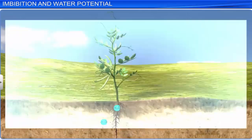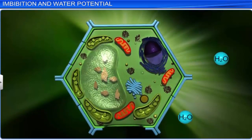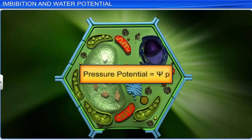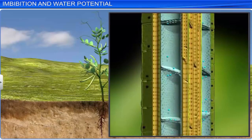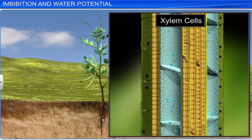When water enters a plant cell due to diffusion, it builds up pressure against the cell wall, causing the cell to become turgid. This pressure applied by the protoplasm against the cell wall is called pressure potential, which is denoted by Psi P, and is usually positive. However, negative pressure potential is critical to water transport up the stem via xylem cells. Hence, the water potential of a cell is a combination of its solute potential and pressure potential.